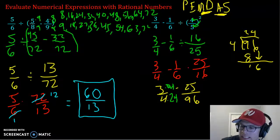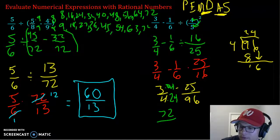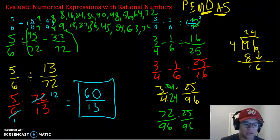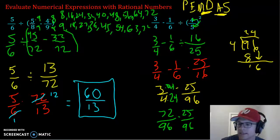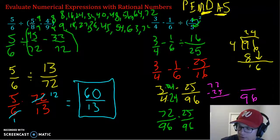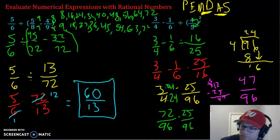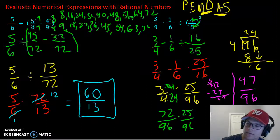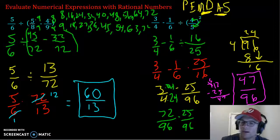3 times 24 is 72 over 96 minus the 25 over 96. So we're just going to take 96 as our denominator for the answer since they're common, and then 72 minus 25, 7 here, 47. 47 does not go into 96 so this is completely reduced.